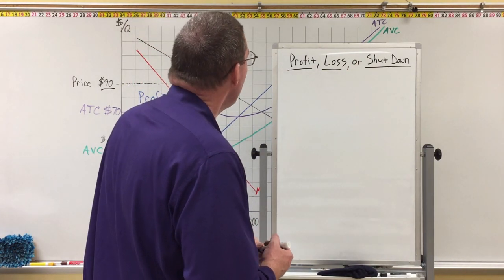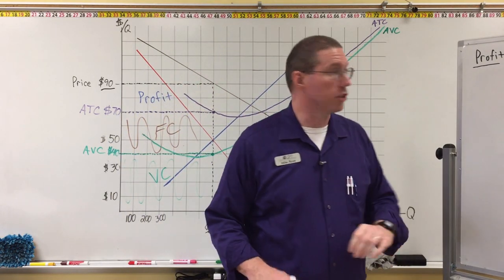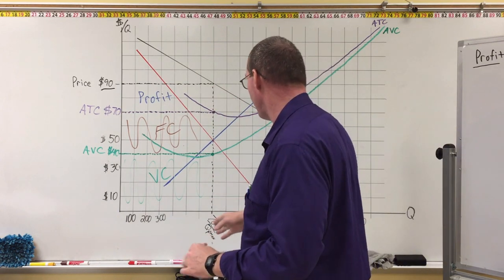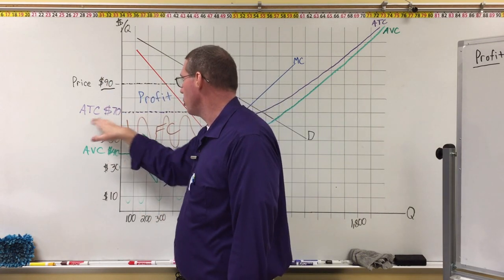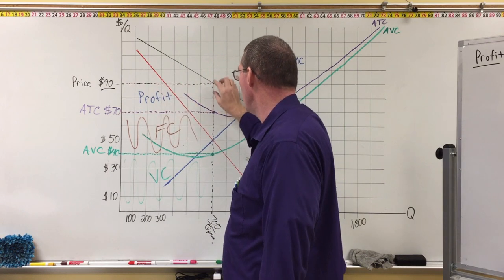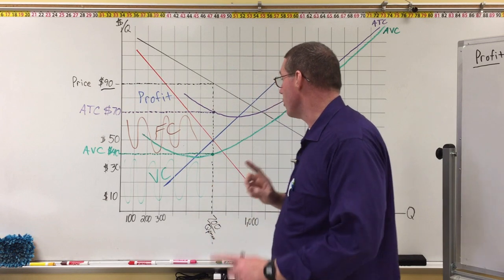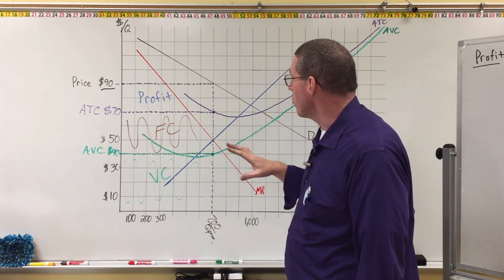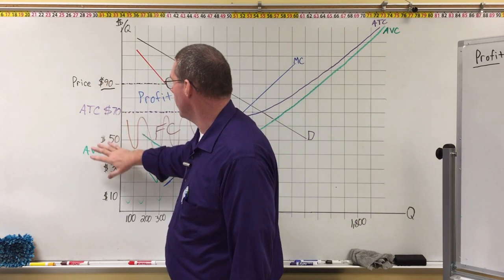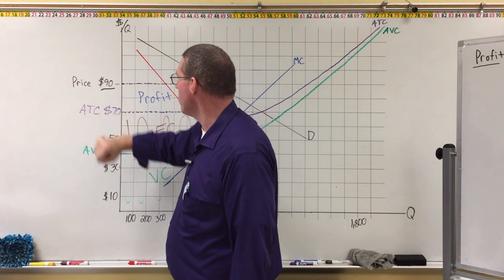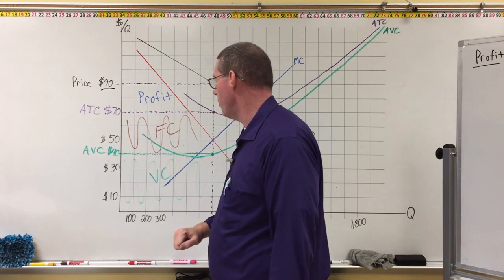If we look at this particular market graph, we can see the profit-maximizing quantity. We know that the price is $90 and the average total cost is $70. This rectangle here represents the profit of the business. On the left side, you can see that we have identified the price, the average total cost, and the average variable cost of the business.